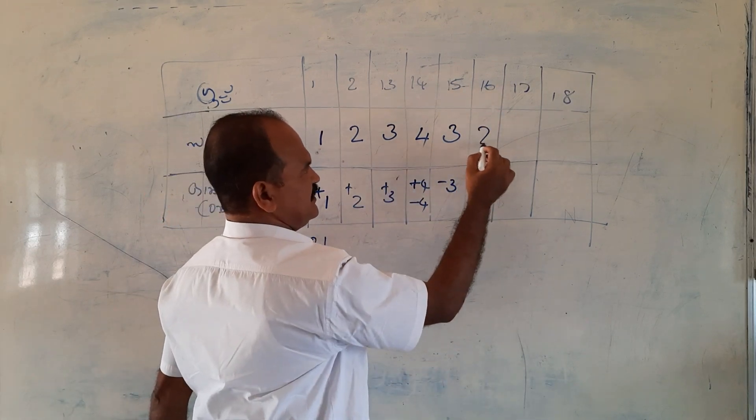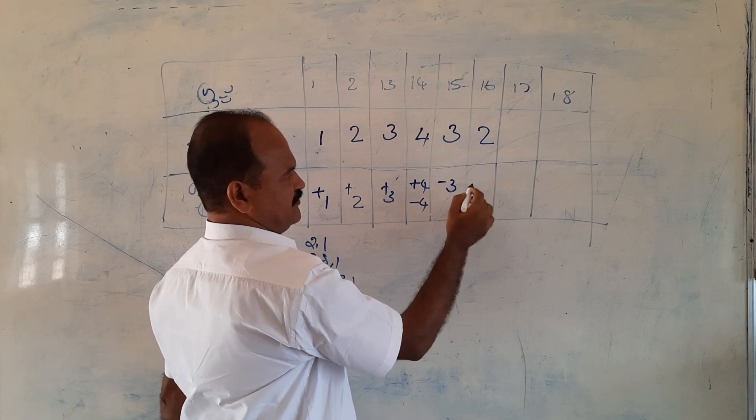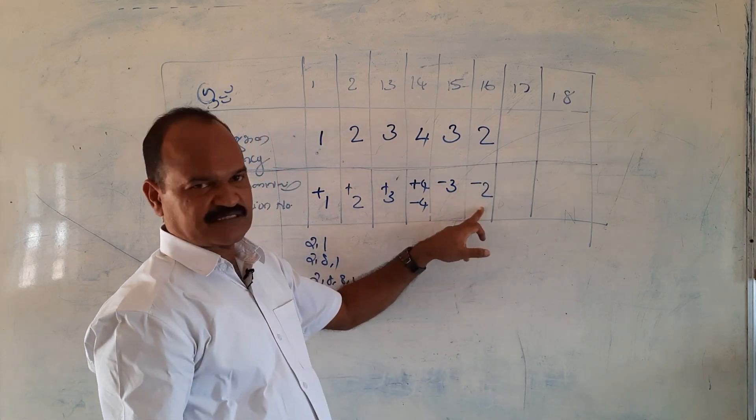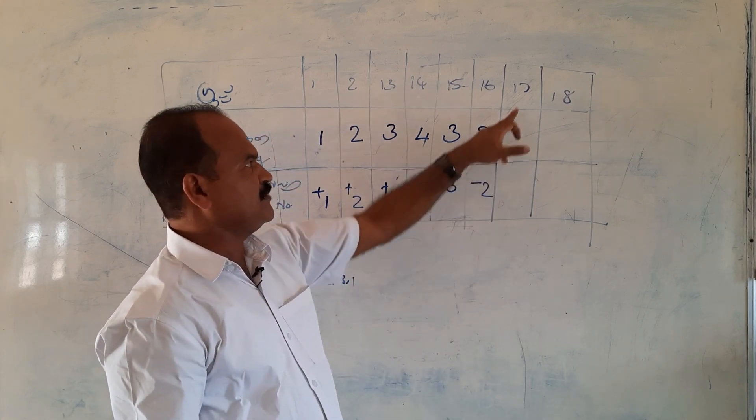Then the valency is 2. What's the difference? 2.